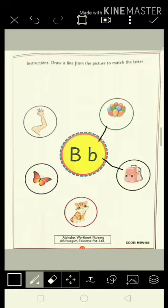The third picture has an animal in it. It is a cat, and it starts with C, so we are not going to match it with letter B.